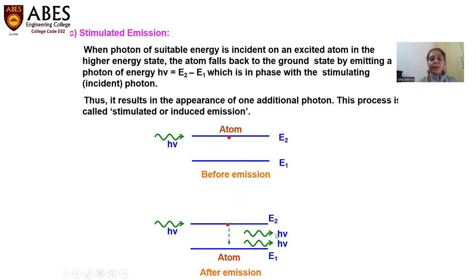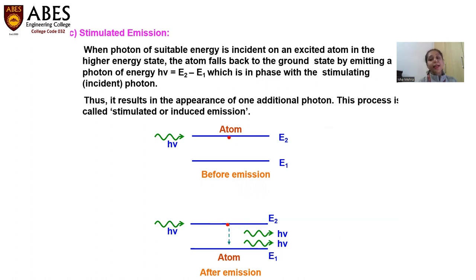Why two photons? One is the energy which initially the atom took to jump up to the higher excited level, and the other one is the energy of the incident photon applied when the atom was already in the higher excited state. This is stimulated emission. In such cases, these photons will be highly coherent — maintaining a constant phase difference among themselves.